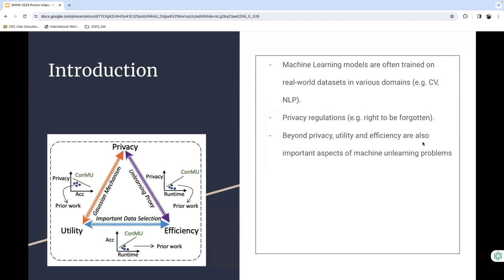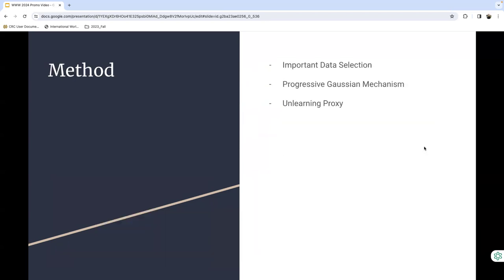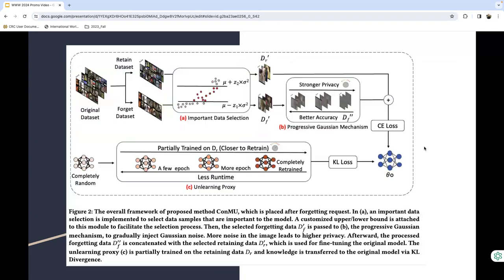The CONMU framework is proposed to address this trilemma. There are three modules in our CONMU framework: important data selection, progressive Gaussian mechanism, and unlearning proxy. The data selection module selectively discards less important data, enhancing training speed.